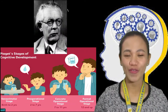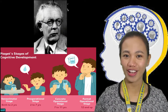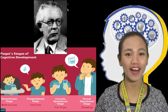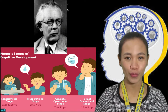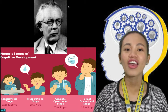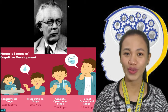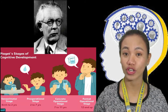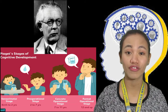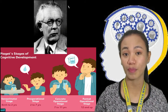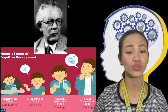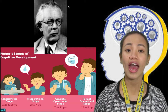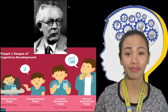Piaget's Theory of Cognitive Development explains how a child constructs a mental model of the world. He disagreed with the idea that intelligence was a fixed trait and regarded cognitive development as a process which occurs due to biological maturation and interaction with the environment.